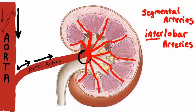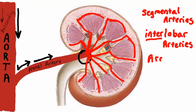Once we have the interlobar arteries, that takes us to the top of the pyramids, where the pyramid arcs around in a little curvature. These arteries arc over the arcs of the pyramids, so they are called arcuate arteries — notice the word 'arc' right in the name.